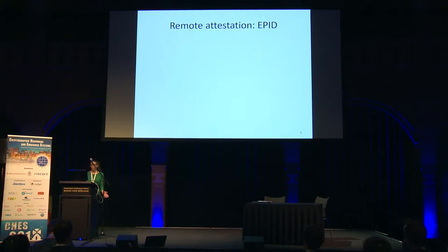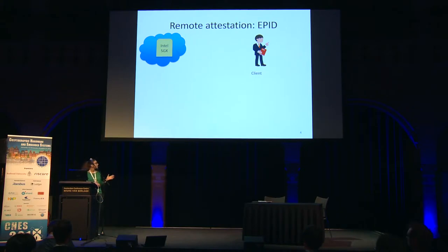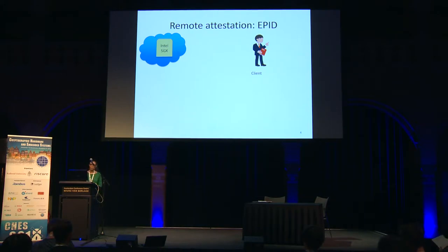Now consider the scenario where we want to put the enclave on the cloud. We have an Intel SGX machine on the cloud and a client. The client wants to make sure it is communicating with a correctly initialized enclave running on genuine SGX hardware. To do so, SGX introduces a remote attestation protocol called EPID — Enhanced Privacy ID.